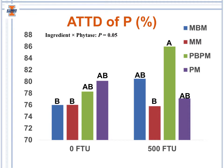For the apparent total tract digestibility of phosphorus, in the absence of phytase there were no differences across dietary treatments. However, with the addition of microbial phytase, pigs fed diets containing poultry byproduct meal had greater digestibility of phosphorus than pigs fed diets containing meat meal.